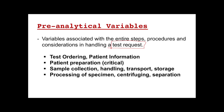Sample collection, handling, transport, and storage are also pre-analytical variables. This includes proper techniques in phlebotomy, the tubes used for the test, proper mixing of the tube containing the specimen, the correct anticoagulant, temperature of handling, and where to store the specimen. Processing of specimens includes centrifugation and separation — for example, separating cells from plasma or serum — avoiding hemolysis, and proper pipetting techniques.